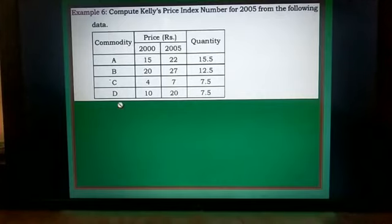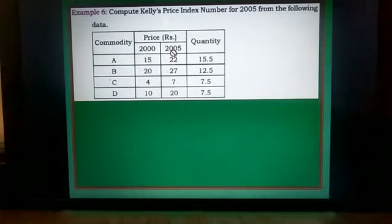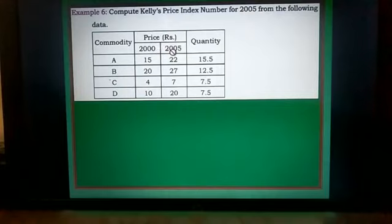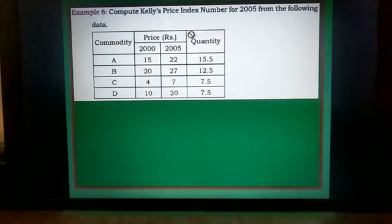Commodities A, B, C, D are given. Price in 2000 is P0 because 2000 is the base year as compared to 2005. So 2000 is the base year and 2005 is the current year. Price in base year 2000 is P0, price in current year 2005 is P1, and quantity is given — neither base year nor current year quantity — so it is written simply as Q.